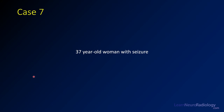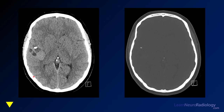Today we have a 37-year-old woman who's having seizures. What you'll find in a lot of these brain tumor patients, seizure is going to be the history provided. Here we have a couple of images from a CT — a brain window and a bone window. We're going to pause for a second as we look at these, so just focus on what you think the abnormality might be.